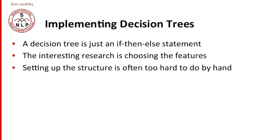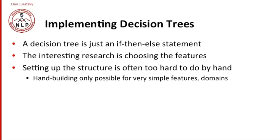In general, the structure of the decision tree is often too hard to build by hand. Hand building of decision trees is possible only for very simple features or simple domains. You might build a simple decision tree with six or seven rules like this for some simple tasks.